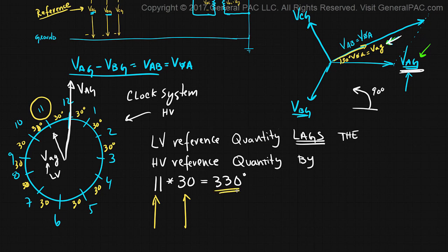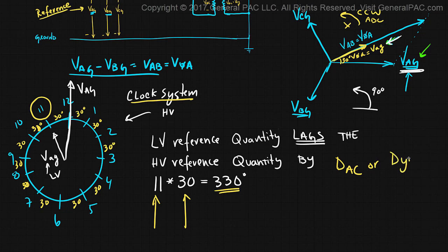So it goes back to exactly what we were saying in the past — the secondary voltage, the yellow phasor, lags the primary voltage by 330 degrees as the phasors rotate in the counterclockwise direction, given that it's an ABC phase sequence. This is how we represent the clock system using this particular phasor diagram and this particular DAC or DYN11 transformer connection.